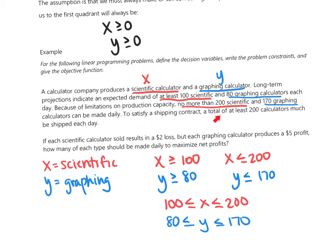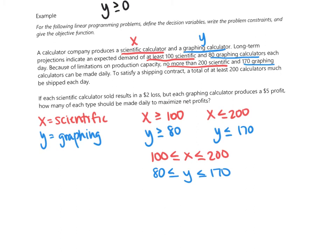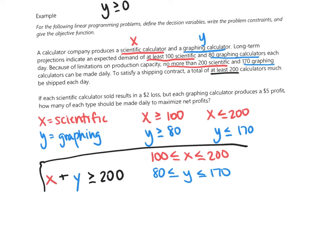To satisfy a shipping contract, a total of at least 200 calculators must be shipped each day. So we write X + Y ≥ 200, meaning the combined scientific and graphing calculators shipped must be at least 200. We also include our non-negative constraints: X ≥ 0 and Y ≥ 0, because we have to make both types of calculators.